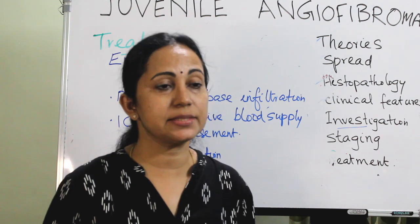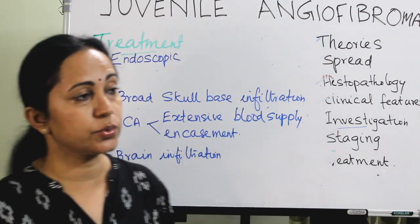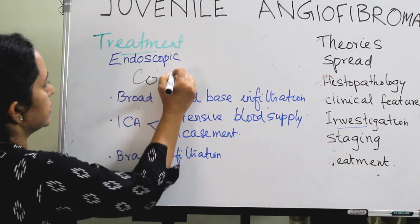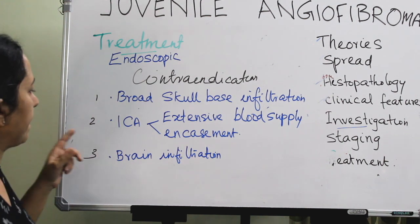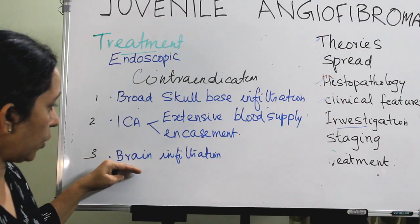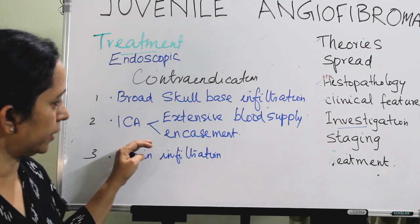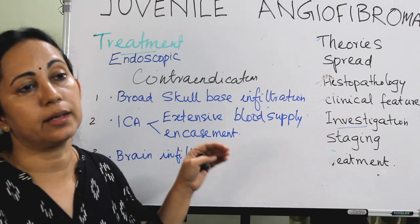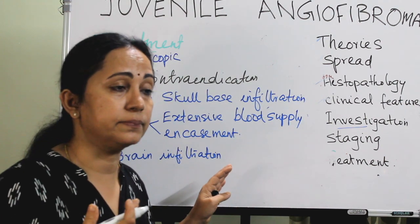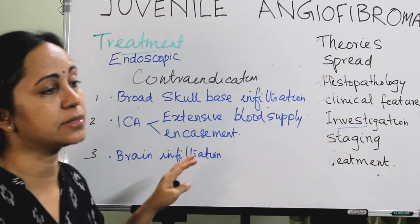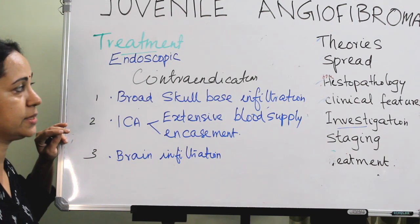The surgeon must have good expertise in endoscopic surgery and adequate instruments. There are very few contraindications for endoscopic removal of JNA: broad skull base infiltration, brain infiltration, and extensive blood supply from or encasement of the internal carotid artery by the tumor. With increasing expertise and collaboration with vascular and skull base surgeons, even these may no longer be contraindications in the future.